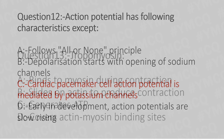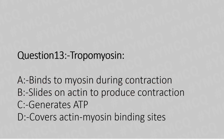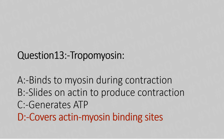Now let's move to question number 13. Tropomyosin — option A: binds to myosin during contraction, option B: slides on actin to produce contraction, option C: generates ATP, option D: covers actin-myosin binding sites. The answer is option D, covers actin-myosin binding sites.